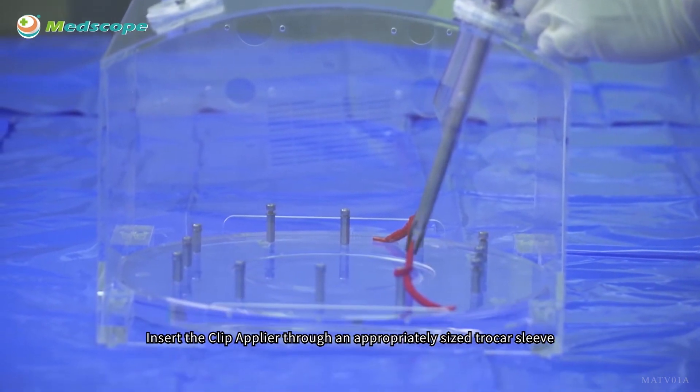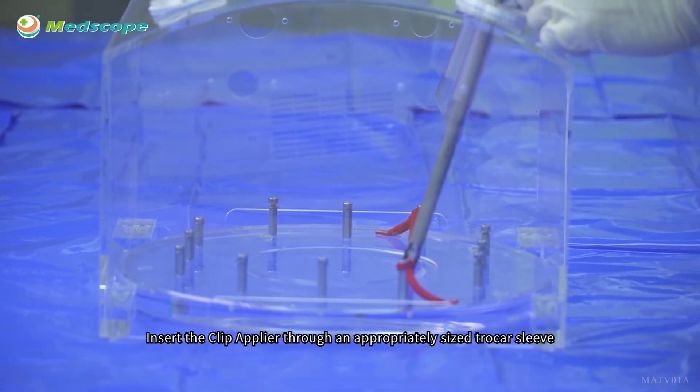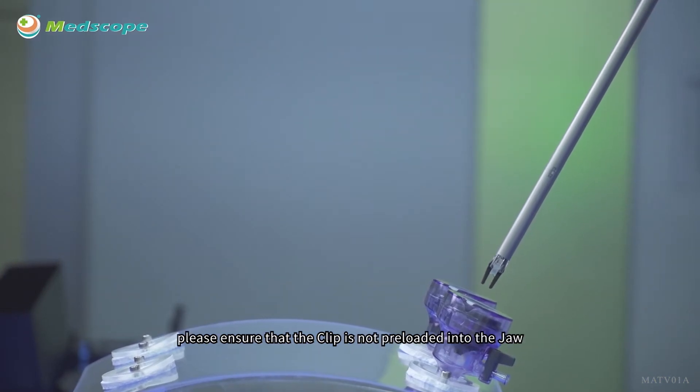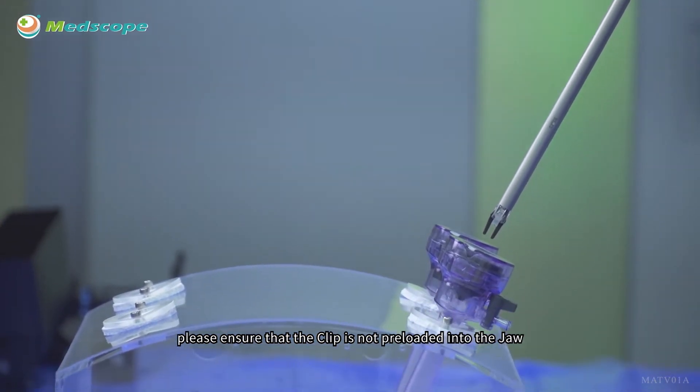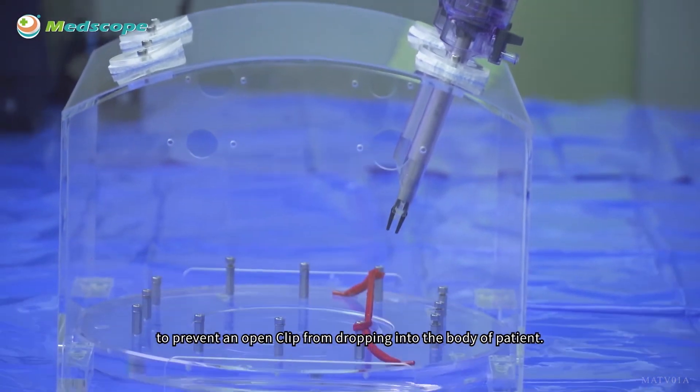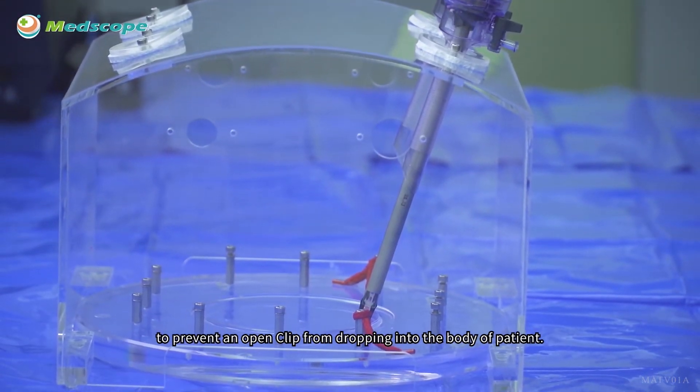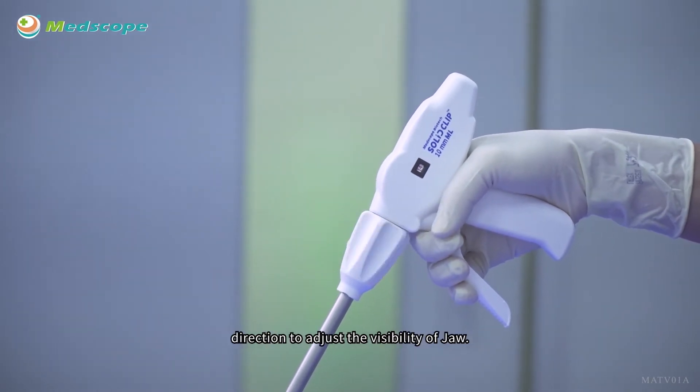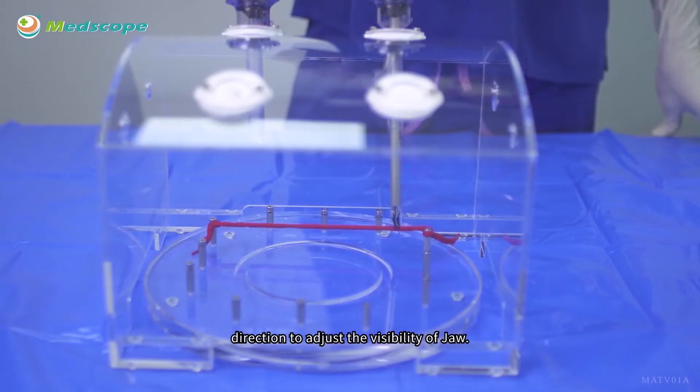Insert the Clip Applier through an appropriately sized Trocar sleeve. If you need to insert the Clip Applier again during an operation, please ensure that the clip is not preloaded into the jaw to prevent an open clip from dropping into the body of the patient. The rotation knob can make the shaft rotate 360 degrees in either direction to adjust the visibility of the jaw.